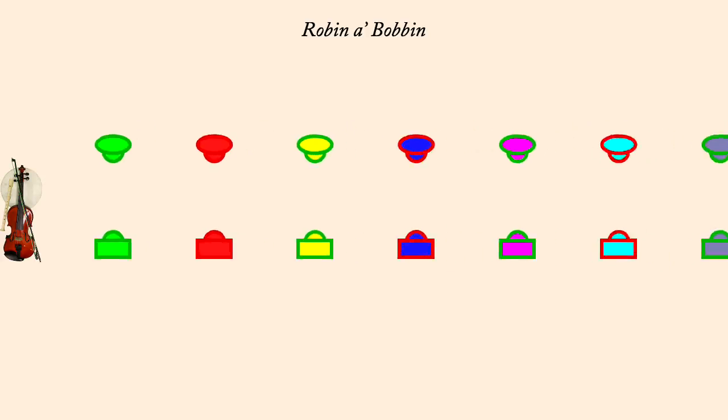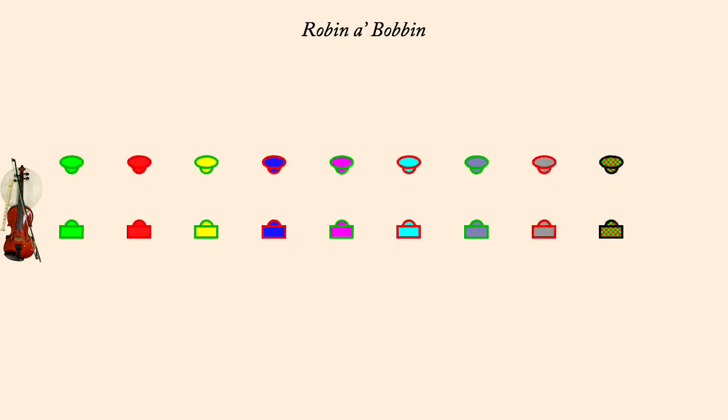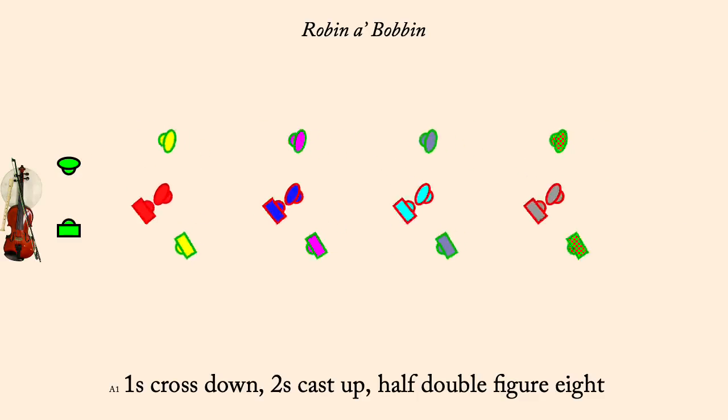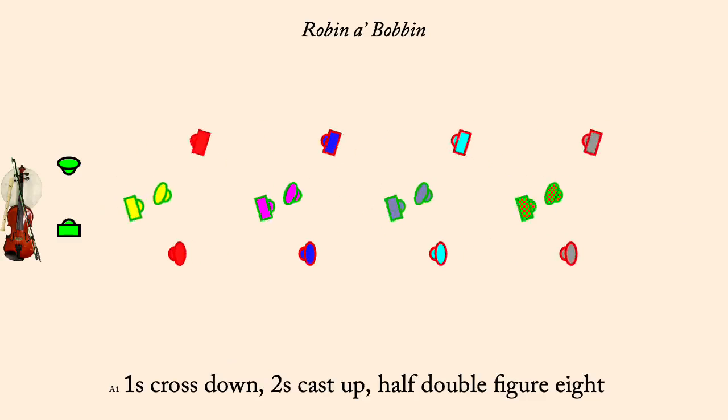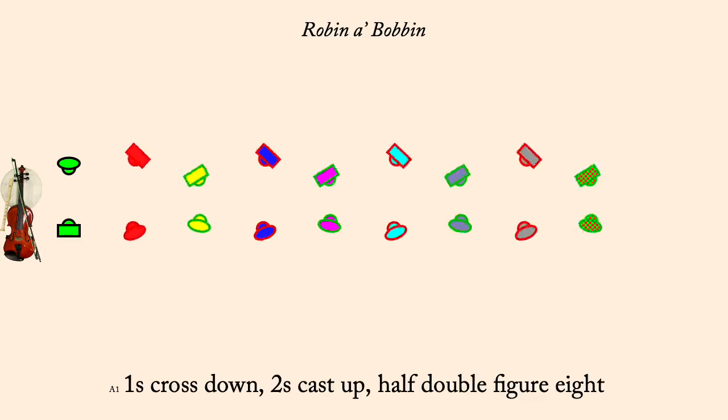Ones cross down, twos cast up, half double figure eight. Partner two-hand turn.